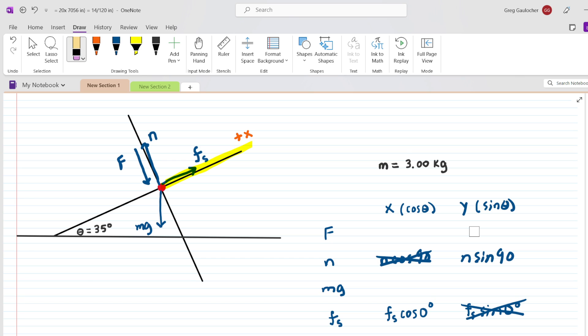And the sine of 90 is one. So, we have the normal force times one, which is really just the normal force. And going back to the static frictional force, the cosine of zero is equal to one. And so, F_S times one is just F_S. So, we can simplify the chart a little bit further.